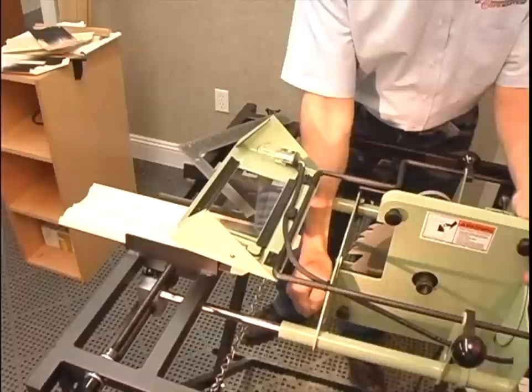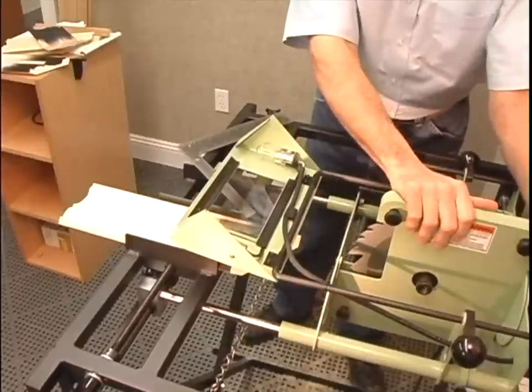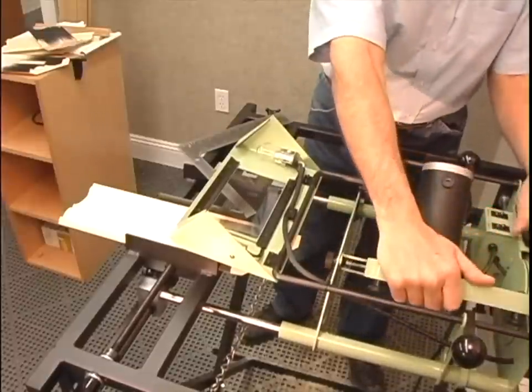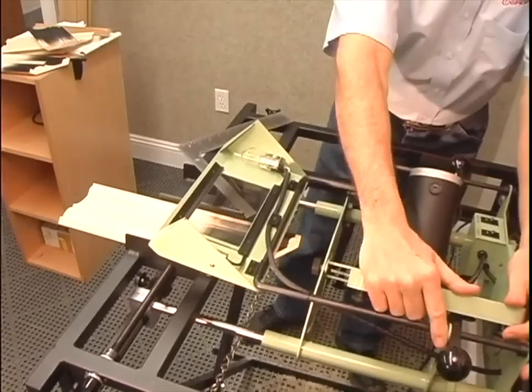To tilt the blade, loosen the knobs on the front and back of the saw carriage, being careful to hold the housing as the weight of the motor will tilt it quickly.